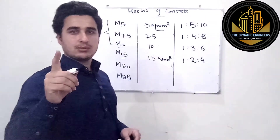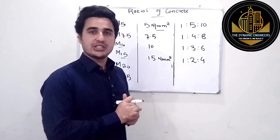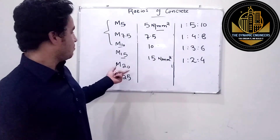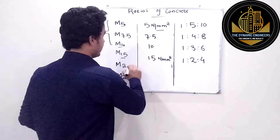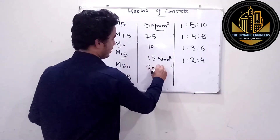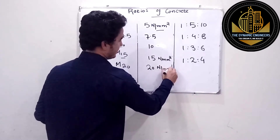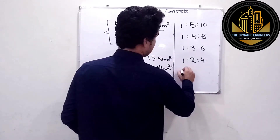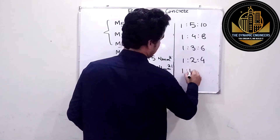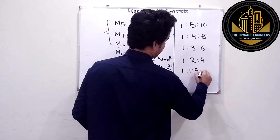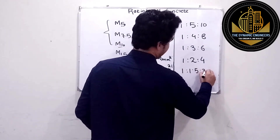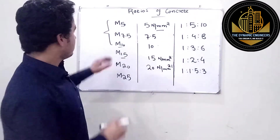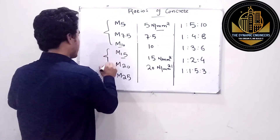For M20, having a concrete strength of 20 Newton per millimeter square, the ratio of different materials is 1:1.5:3 — 1 unit of cement, 1.5 units of sand, and 3 units of aggregate. Both M15 and M20 are normally used in slabs and beams.